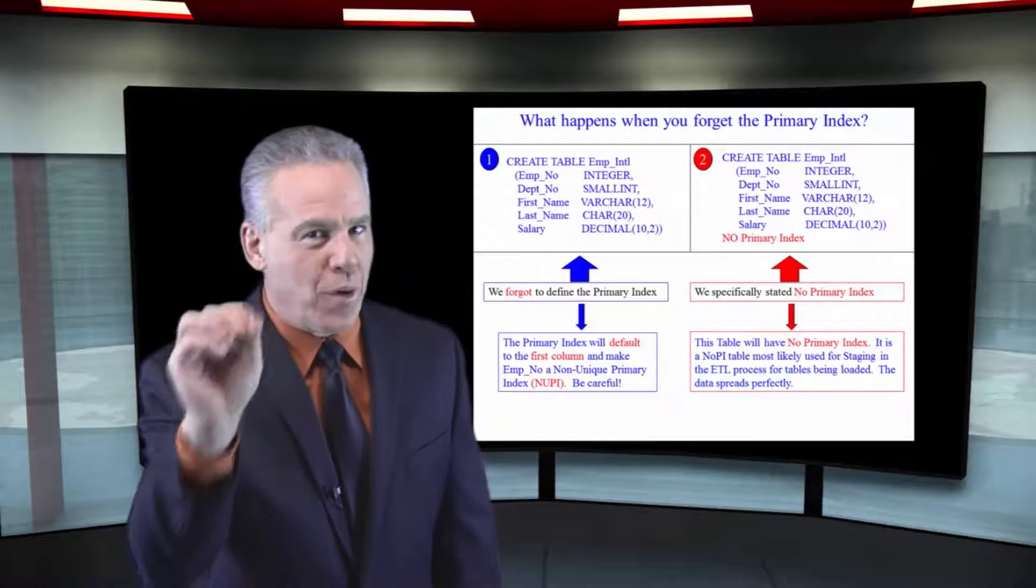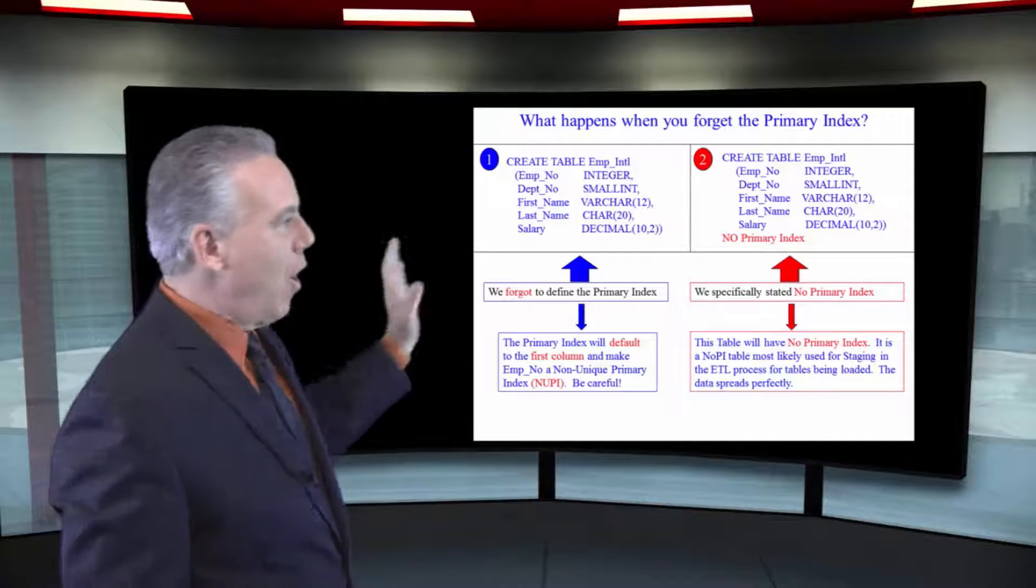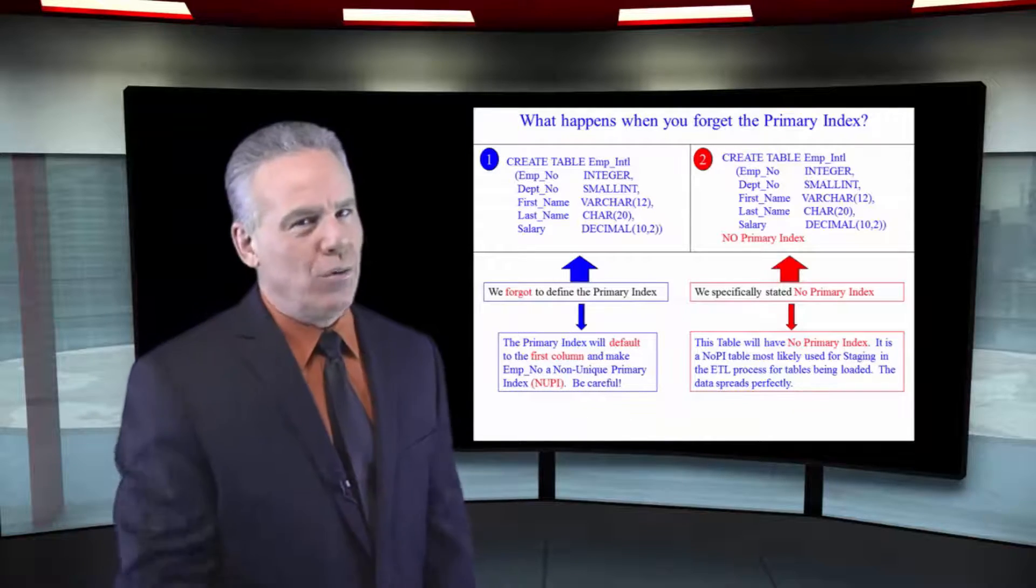Listen, if you forget the primary index, Teradata will generally, not every time, there's a few caveats, I'll explain in later videos. But 99% of the time, if you forget the primary index, it's going to pick the first column in the table and make it a non-unique primary index. So let's not get sloppy. Always put the primary index choice that you want. Don't let it default.